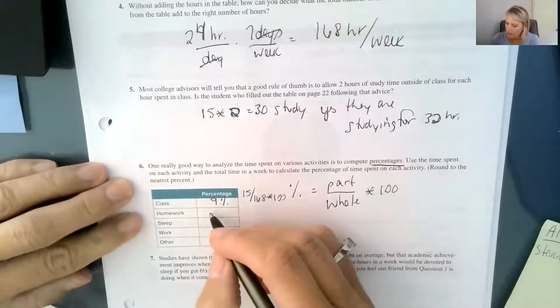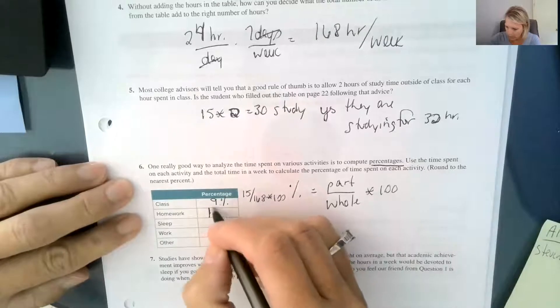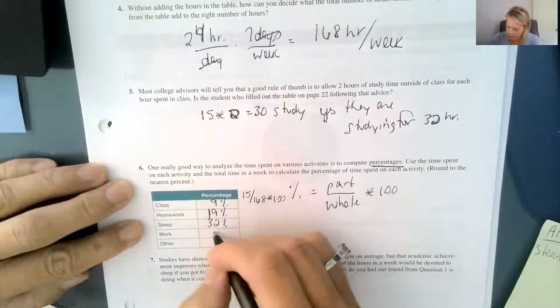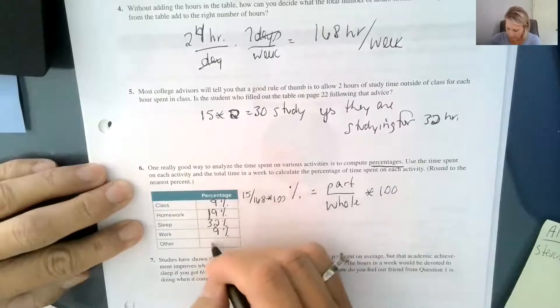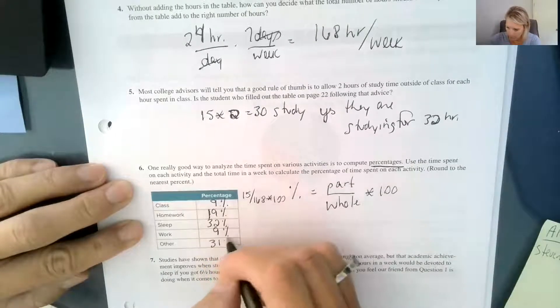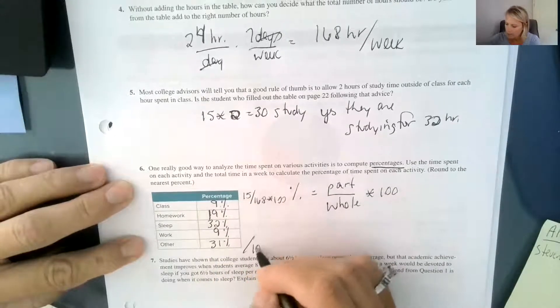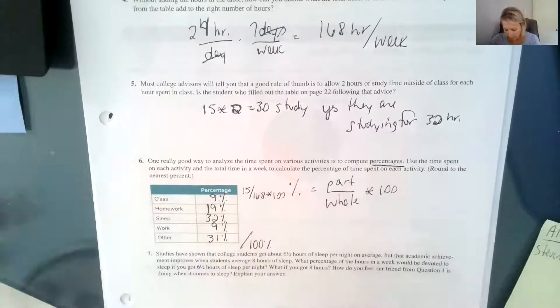And then when we do the same thing for homework, we're going to get approximately 19%, 32%, 9%, and 31%. And sometimes you have to round appropriately to be able to make sure that they add up to be 100% of your time.